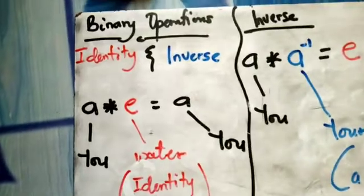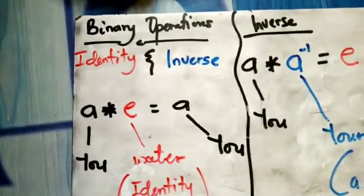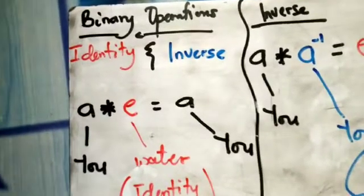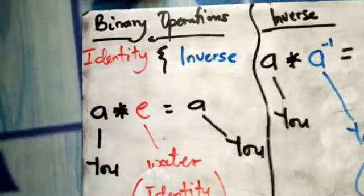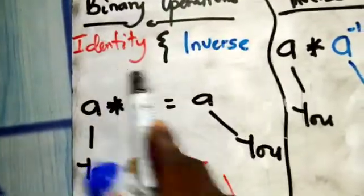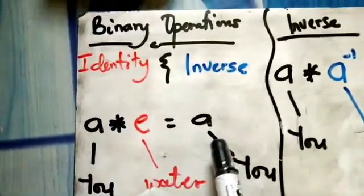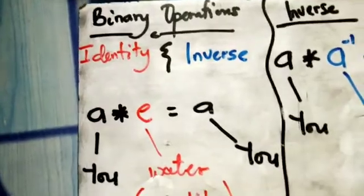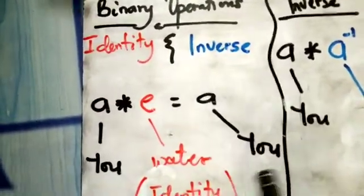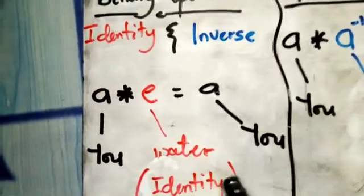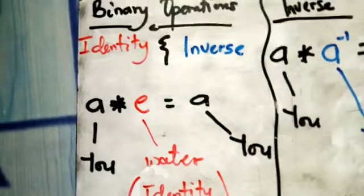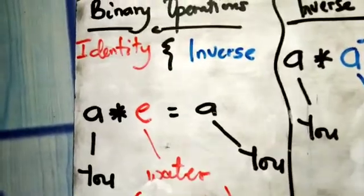We want to find the identity and inverse elements under a binary operation. Under binary operations, you'll sometimes be asked to find the identity element of a certain group, or the inverse element of a particular member of the group.